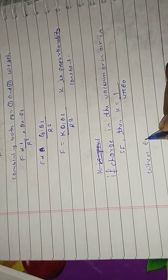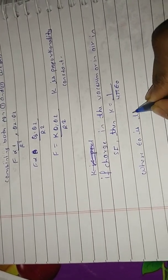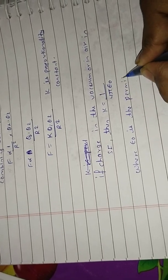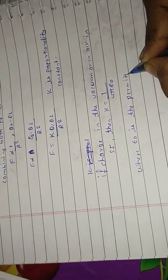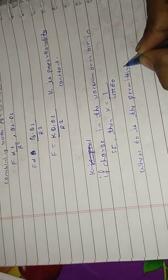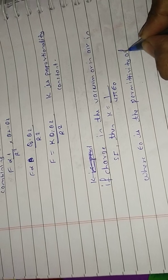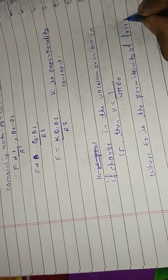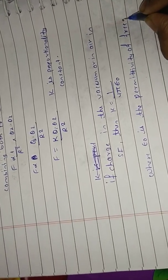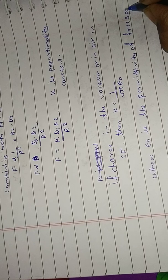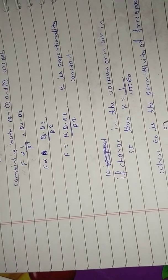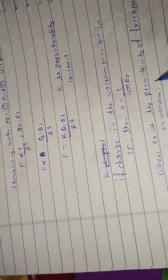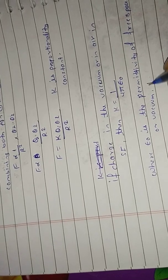Epsilon naught is the permittivity of free space, or vacuum.